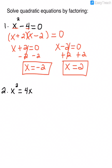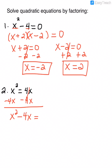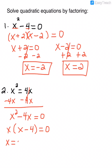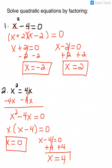In number 2, every time we're solving a quadratic equation by factoring, we want to move everything over to one side and set it equal to 0. I'm going to subtract 4x from both sides of the equation, so that gives me x squared minus 4x equals 0. The greatest common factor is x, so I'm going to factor out an x. Now my equation is completely factored. I take each factor and set it equal to 0 — x is a factor, set that equal to 0, and x minus 4 is a factor, set that equal to 0 and solve. So my two solutions are x equals 0 and x equals 4.